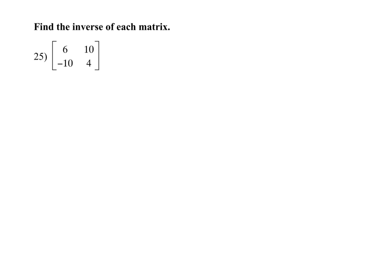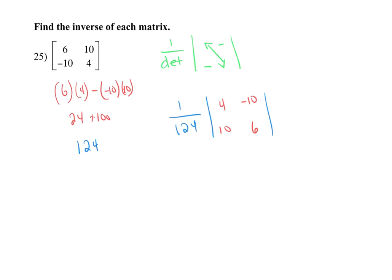So inverse, you are going to do one over the determinant. You're going to multiply that through switching these diagonals and negating those diagonals. So my first step in inverse is to find the determinant. So I'm going to say 24 plus 100. That gave me a ginormous determinant here. All right. So you're going to put 1 over 124. You are going to multiply that through to what happens when I switch the 6 and 4 and negate my other diagonal.